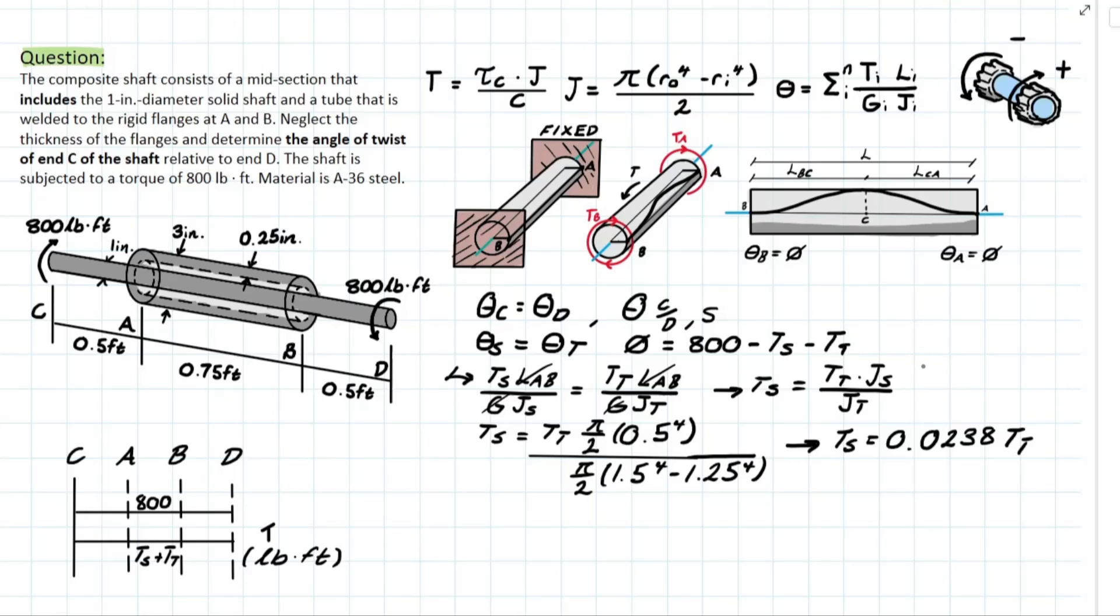Now this is going to look a bit messy. Bringing this back to our relationship up here, we can actually solve for TT. So if we replace TS for TT here and bring everything over to solve for TT, we're going to be left with something that looks like this. We have 800 over 1.0238, leaving us with TT equal to 781.4 pounds per foot.